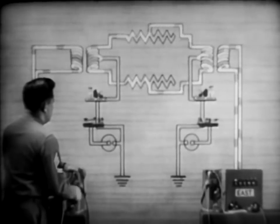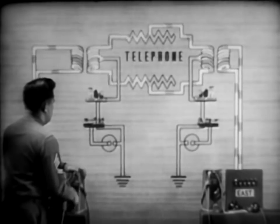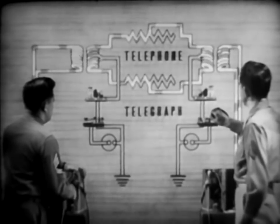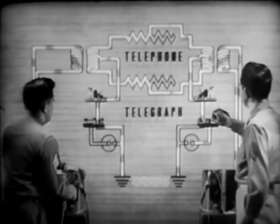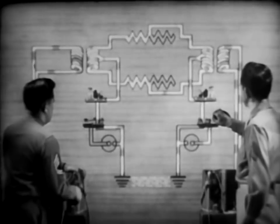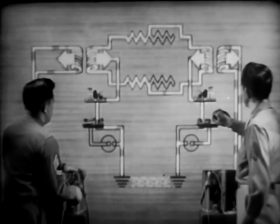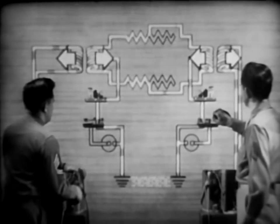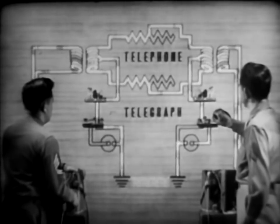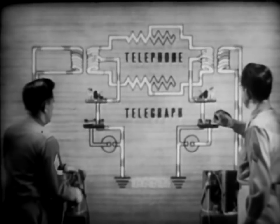Consequently, the telephone circuit doesn't interfere with the telegraph. In reality, the telephone and telegraph currents combine in each wire to form a single current. We can think of them as independent, however, because the repeating coils separate them at either end. Both channels may be used simultaneously, and we get two for the price of one.